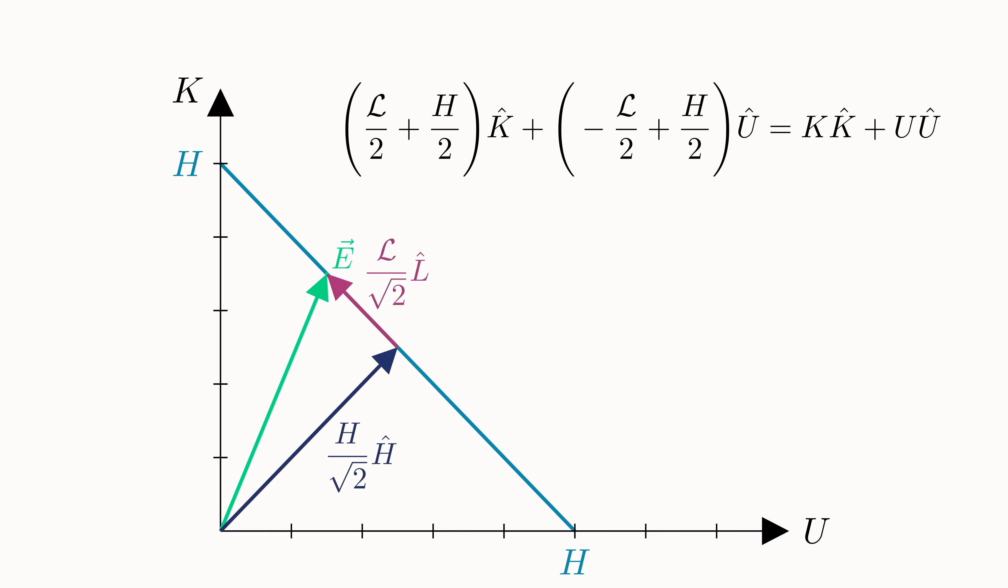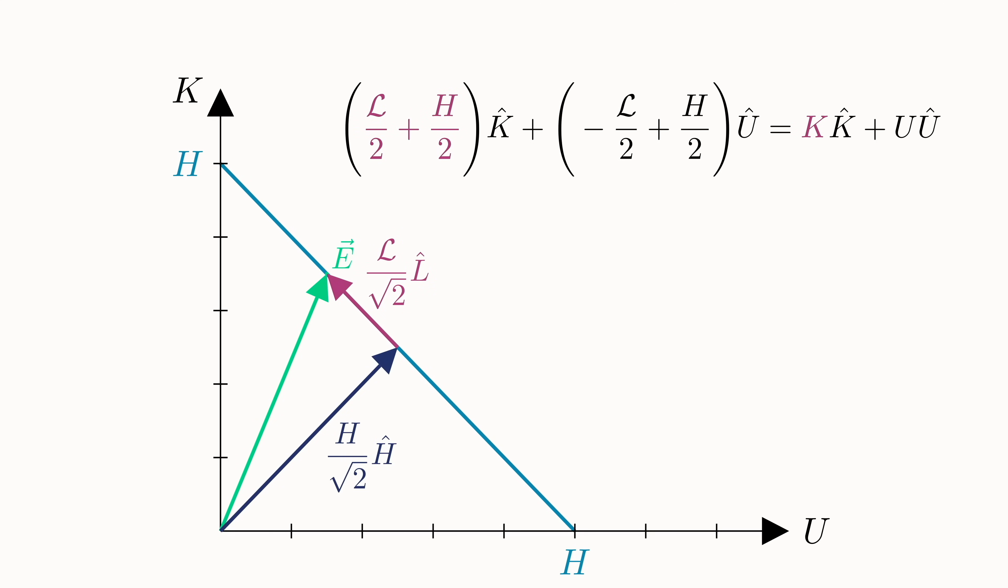Now since u-hat and k-hat are perpendicular, then the coefficients for each must be equal. Finally, subtracting these two equations from each other, we end up with an expression for l, which as you can see is the classical Lagrangian.